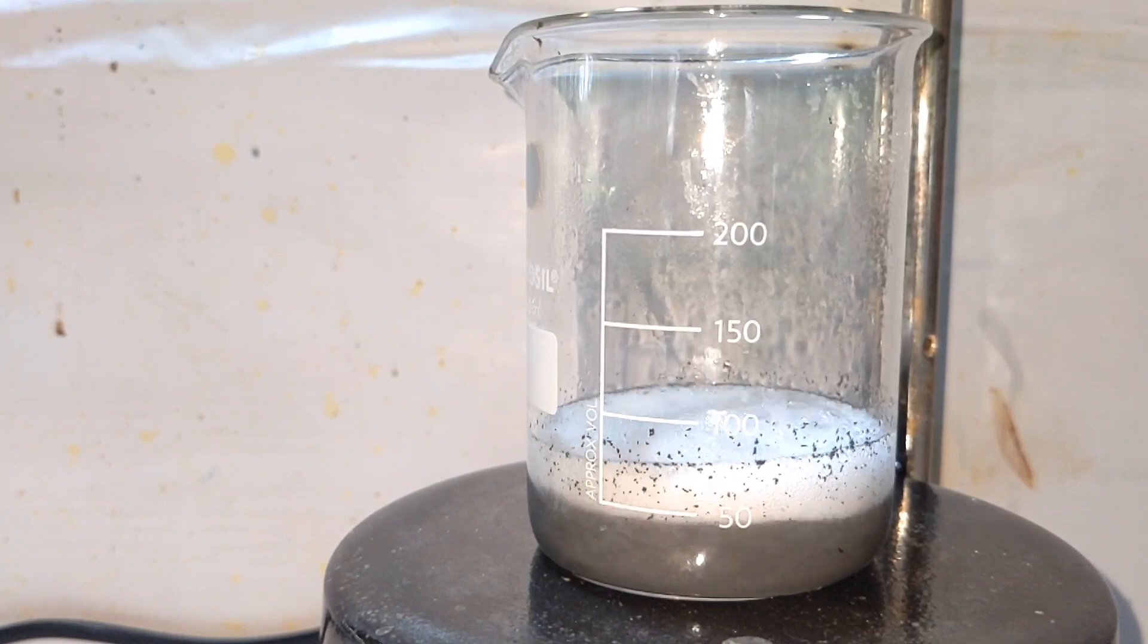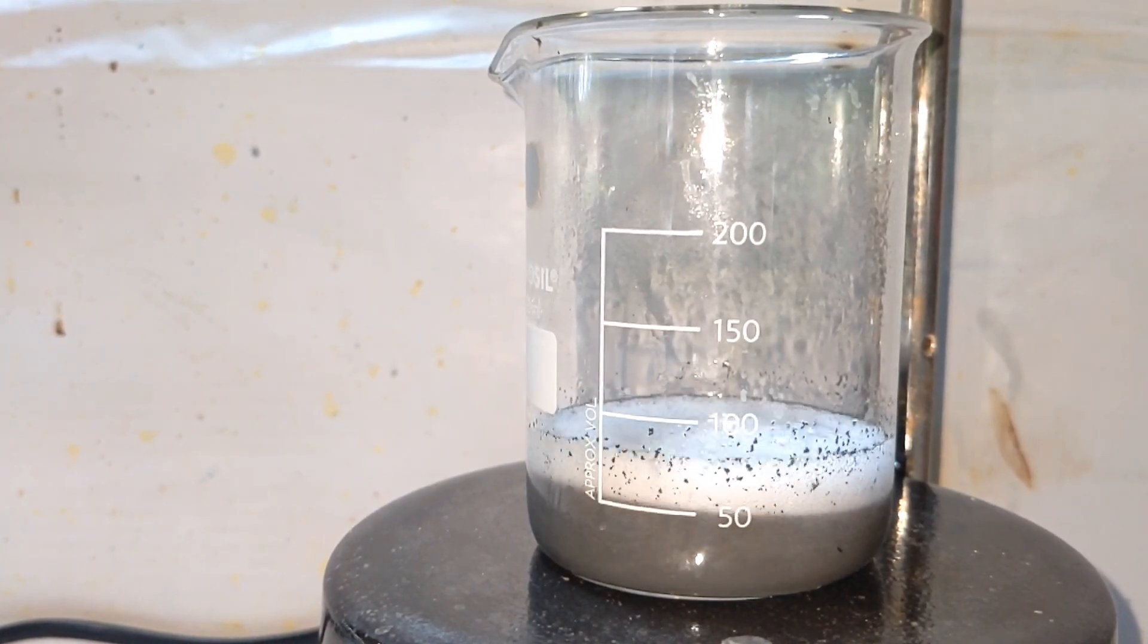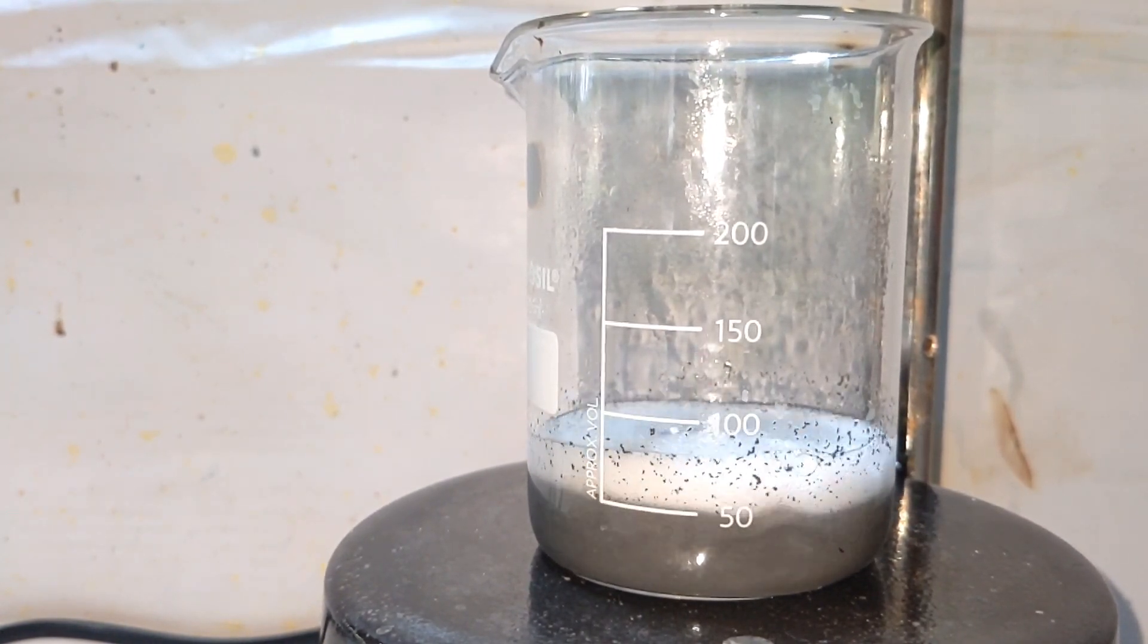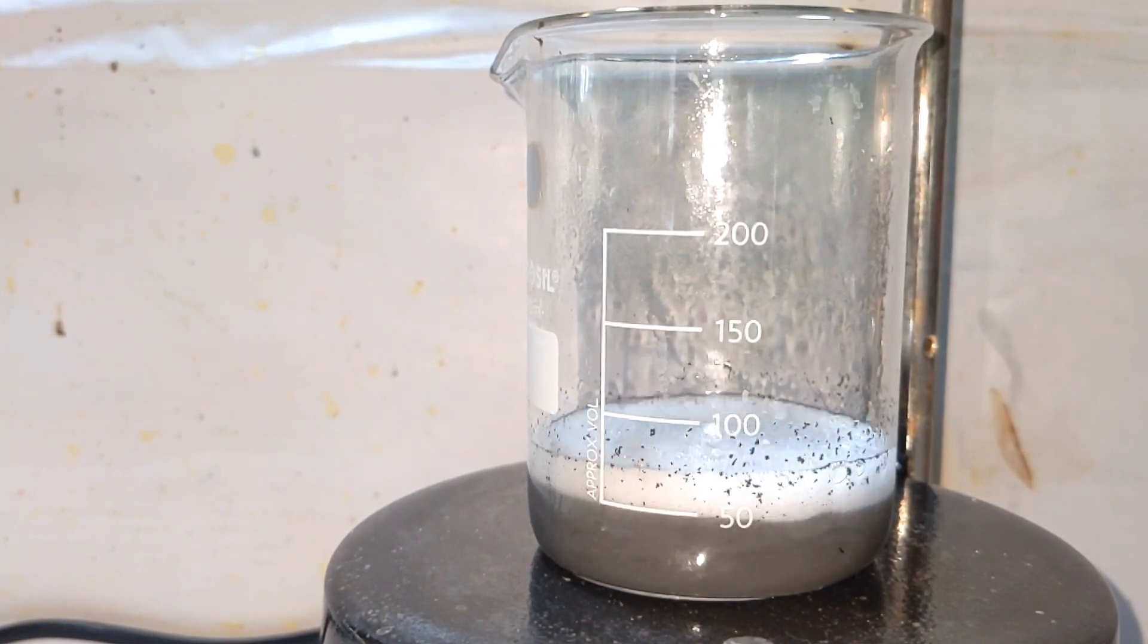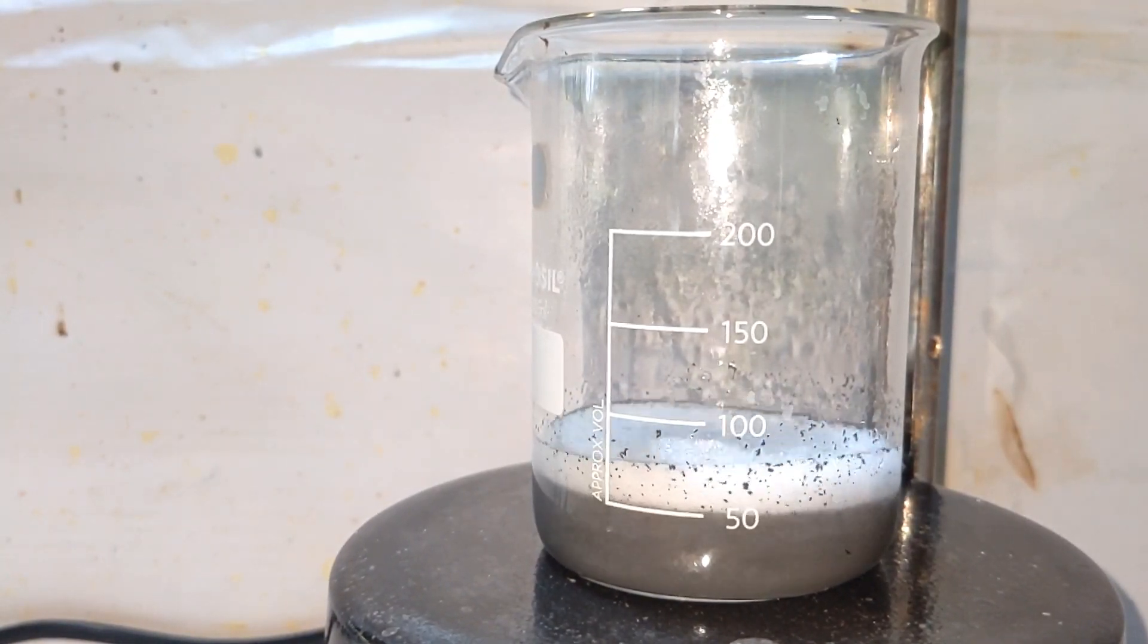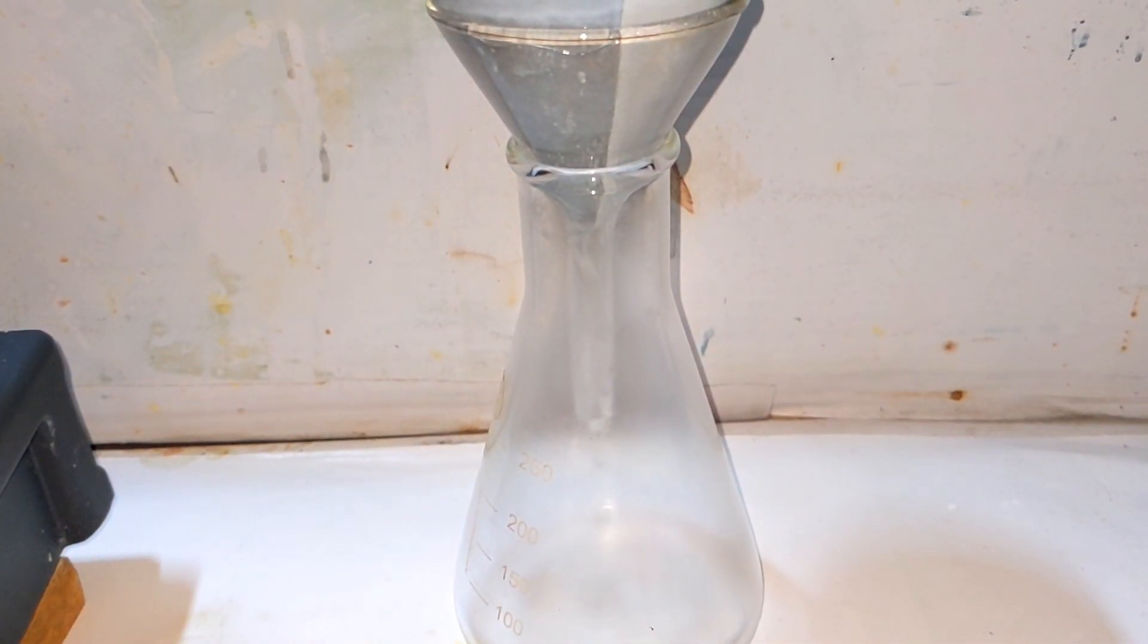You can see a lot of foaming going on and a dark precipitate is seen on top. All those are impurities that remain unreacted. We keep on adding hydrogen peroxide in small lots when you see the reaction dying down.